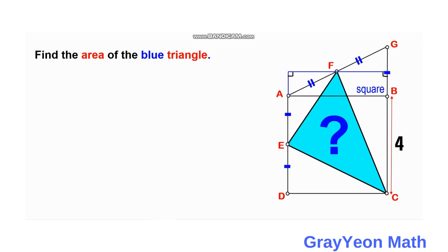Since the side of the square is 4, and this is divided into 2 and 2, so this is 2 and this is 2 units. If you draw a line from F downwards, this is also 2 units and 2 units because the hypotenuse is divided into 2. So GB is also 2, but it is divided into 2, so this will be 1 and this is 1.